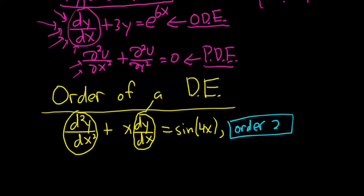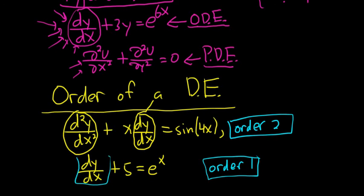What if we had dy/dx plus 5 equals e to the x? In this case, the order would be 1 because we only have a first derivative here, and that's the highest derivative we have.